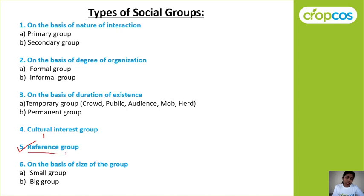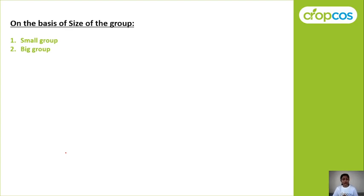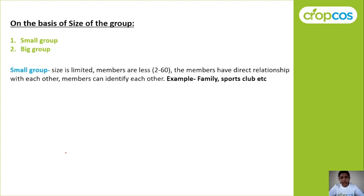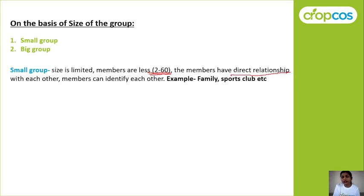We have also read about reference group. Now, without wasting much time, we will start with classification on the basis of size of the group. The group is divided into two types: small group and big group. In a small group, the size is very limited — members count is 2 to 60 members only. These members have a direct relationship with each other; they are close to each other and share their feelings.